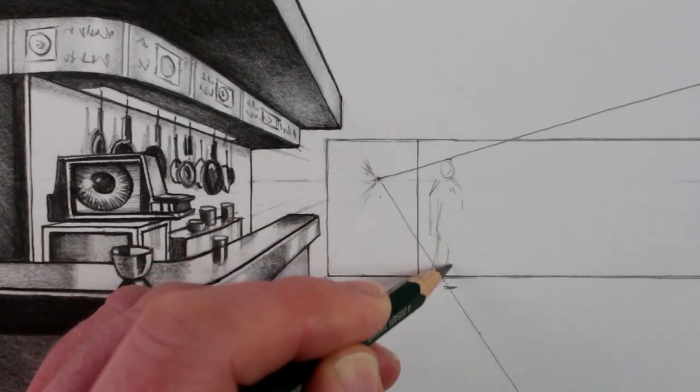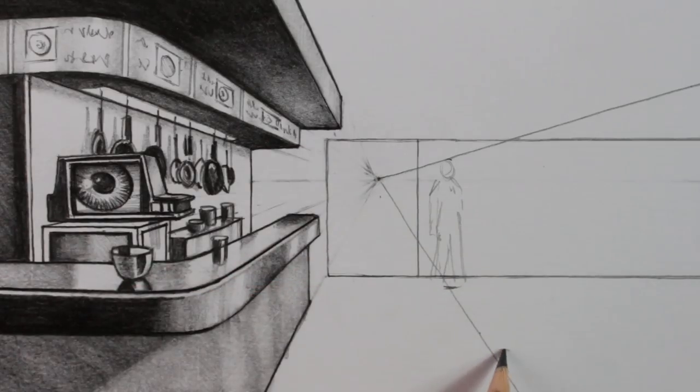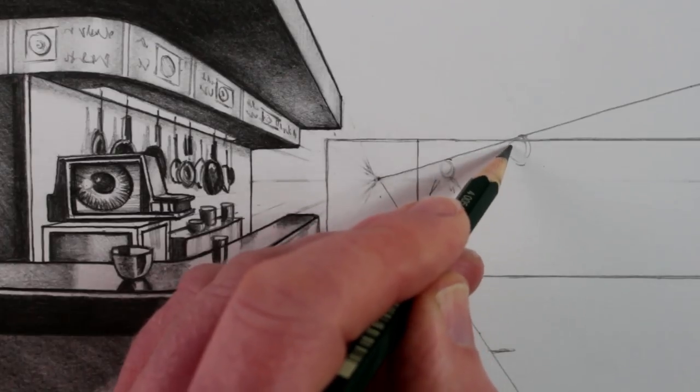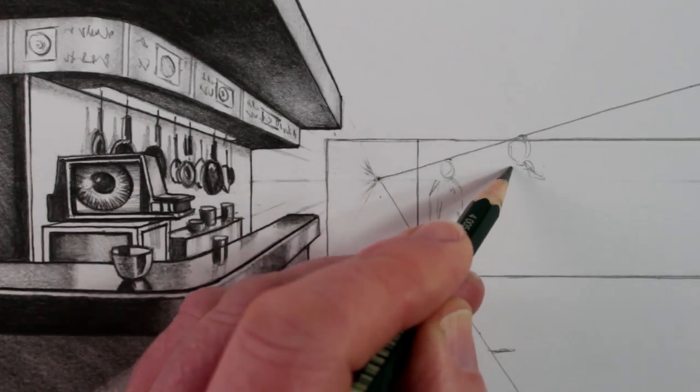Once we have placed the person, we can draw a simple head, and sketch the body, a long coat, trousers and boots. Let's add another officer K here, between these two diagonal lines.